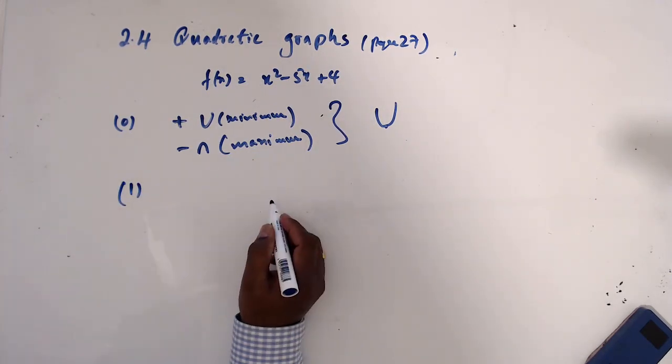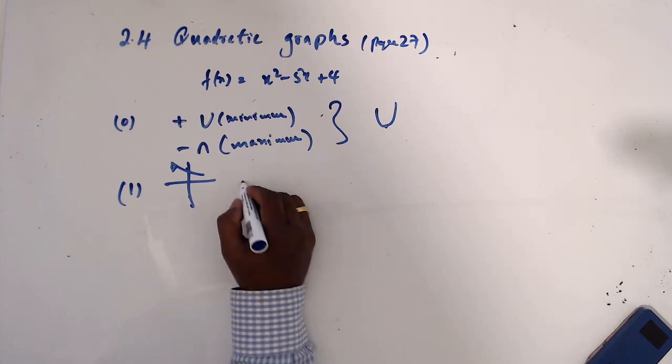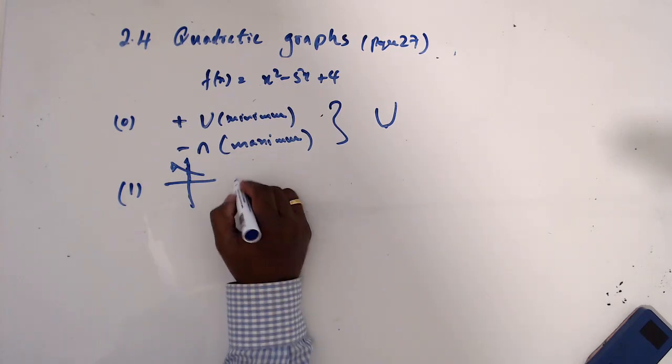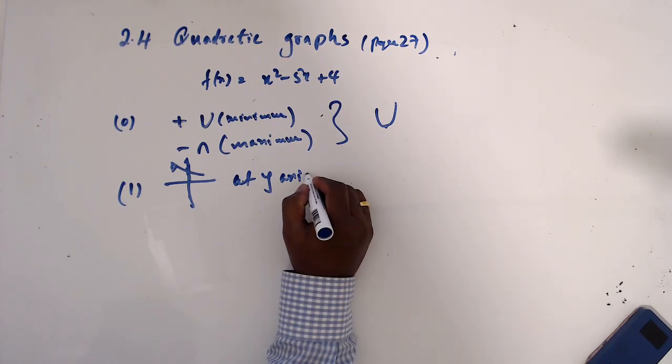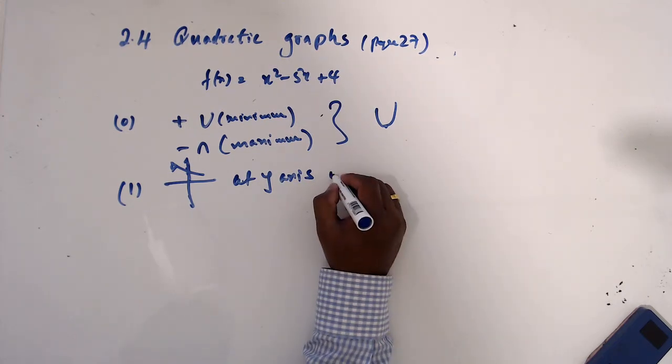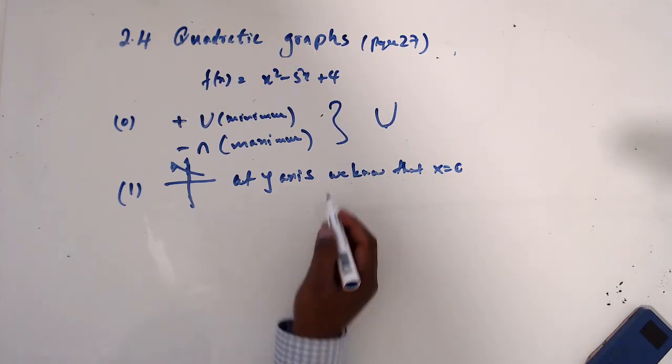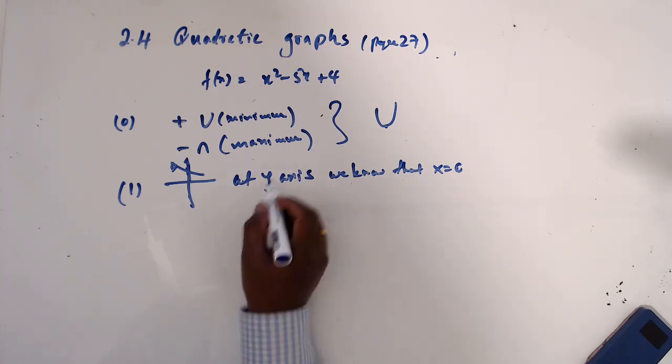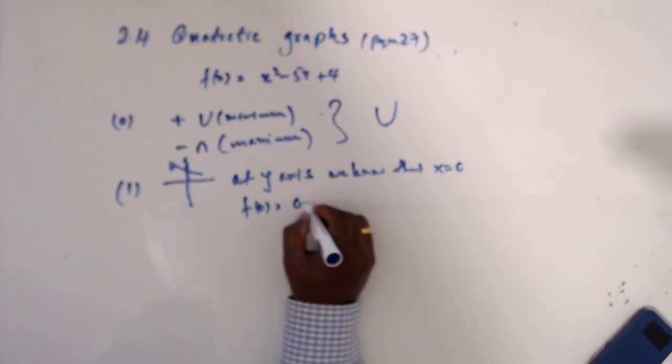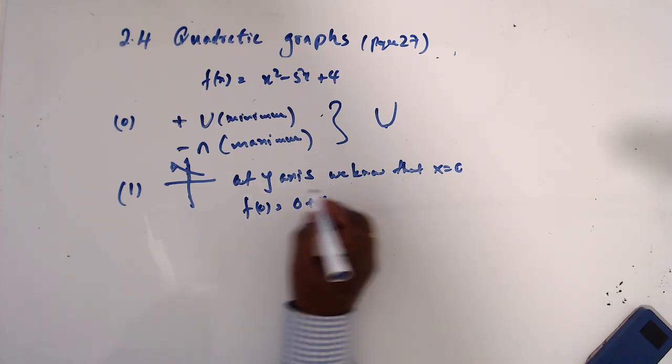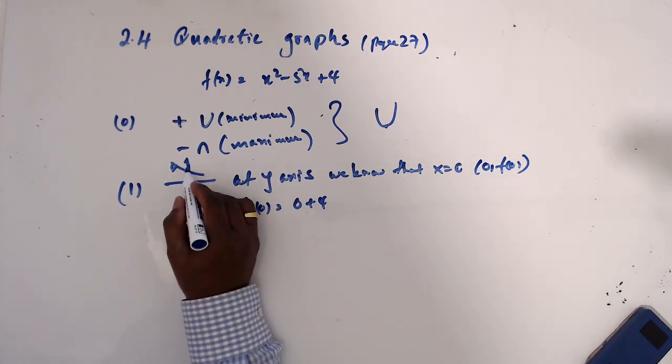Then step 1. We want to find where this graph cuts the y-axis. So at the y-axis we know that x equals 0. So we'll find when x equals 0: f(0) is 0 plus 4. So what are the coordinates? (0, f(0)). This is the place where this graph cuts the y-axis.